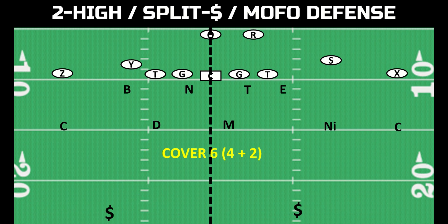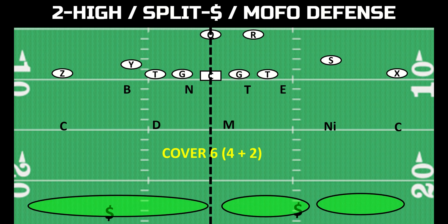And then the fun stuff — cover six. Cover six is when we are playing cover four to one side of the field and cover two to the other side of the field. Cover six specifically is quarters to the passing strength, which is where the nickel defender or the slot receiver is in 11 personnel. Cover six is quarters to the passing strength and then cover two — half — to the passing weakness. So this is quarters to the right and cover two to the left. Cover four plus two equals six — hence why it's called cover six.